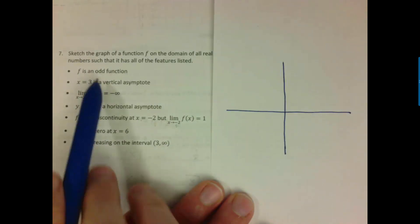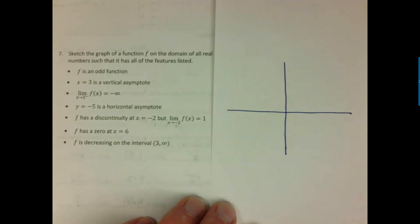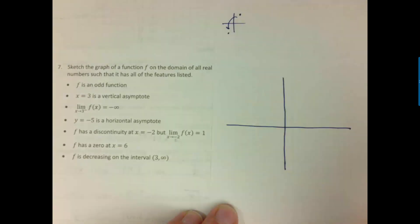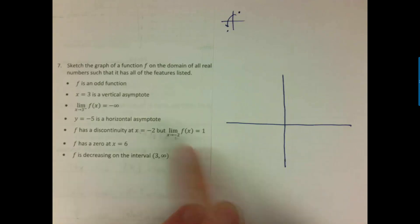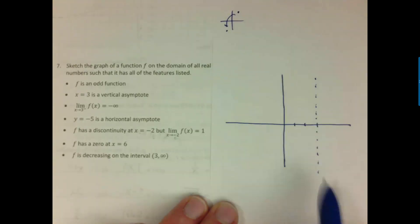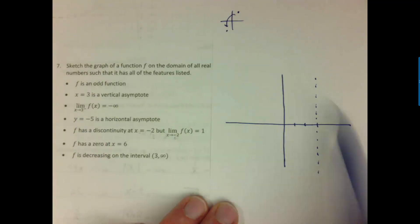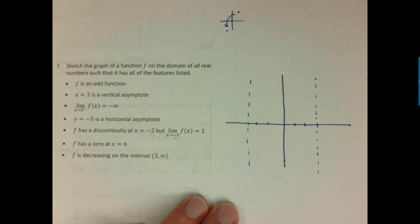Problem 7 asks you to understand what each condition describes about a graph and figure out a graph that simultaneously satisfies all those conditions. F being an odd function means it has 180-degree rotational symmetry — knowing a point in one place also tells us a point elsewhere. With a vertical asymptote at x = 3, applying the odd function symmetry immediately tells us there's also a vertical asymptote at x = -3.